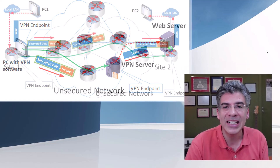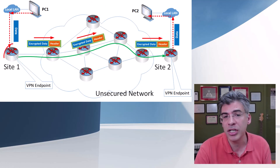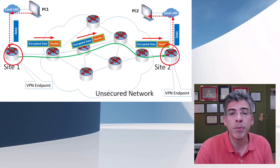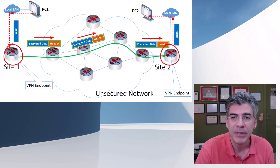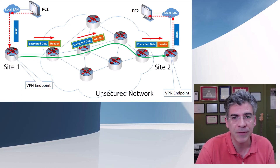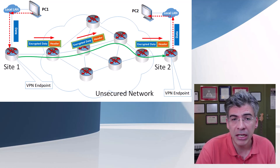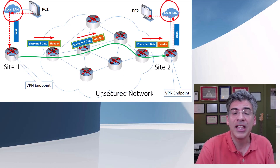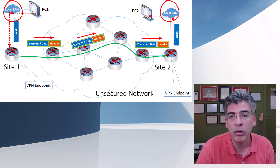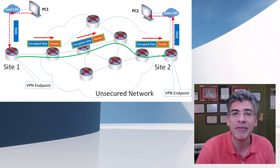When it comes to site-to-site VPNs, the VPN endpoints change. A site-to-site VPN will use network devices, such as routers or firewalls, to perform the role of the VPN endpoint. This allows two remote networks, such as branch offices, to be connected to each other as if they were on the same physical network. I've added little clouds here, labeled local LAN, to emphasize the fact that all devices on each local LAN can communicate with all devices on the other LAN securely through that VPN.